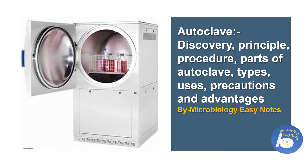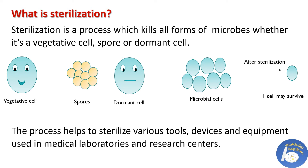Uses, precautions during autoclaving, and advantages of autoclave. Before talking about autoclave, first let's understand what is sterilization. Sterilization is a process which kills all forms of microbes, whether it's a vegetative cell, spore cell, or dormant cell. Sterilization makes sure there is no contamination, and after sterilization, survival chances of an organism or cell is one in a million.